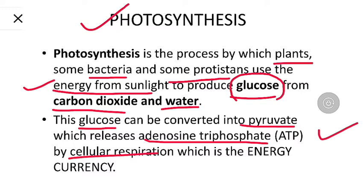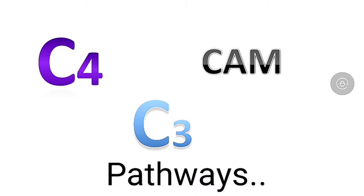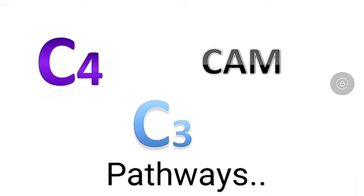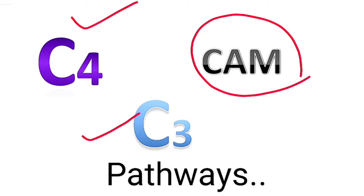Now we will see the different kinds of mechanisms present in different plants for photosynthesis. There are three important kinds of photosynthetic pathways: the C3 cycle, the C4 cycle, and the CAM cycle. We can call them cycles or pathways, and we'll learn them one by one.